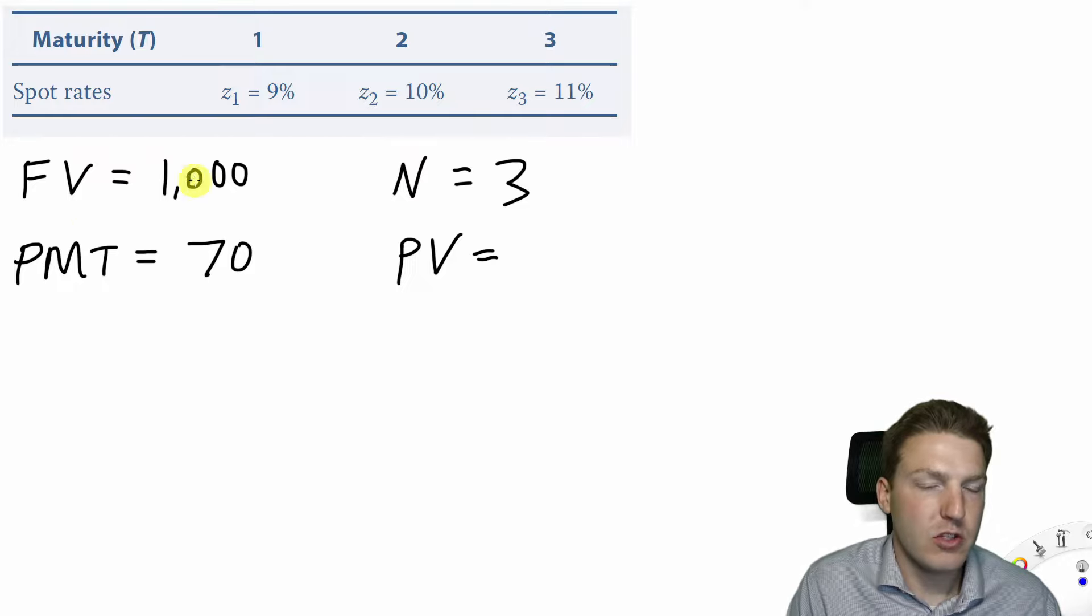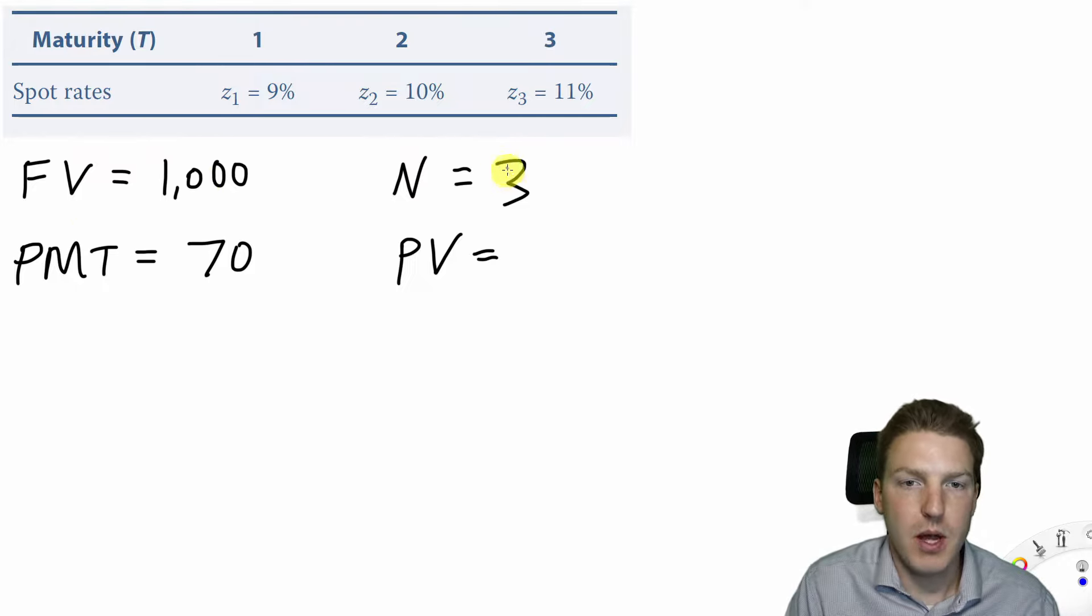Here you'll see the attributes of a three-year bond that pays $1,000 notional at the end of its life and a $70 payment each year. How would we find the present value?